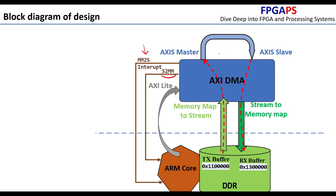The streaming master and slave ports are used for high-speed data streaming between the DMA and peripherals located in the PL. The AXI Lite interface gives complete access to the ARM core so it can control the AXI DMA and read its status.